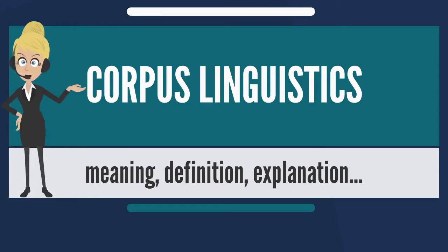Corpus Linguistics is a study of language as expressed in corpora — samples of real-world text. The text-corpus method is an inductive approach for deriving a set of abstract rules from a text for governing a natural language, and how that language relates to and with another language.